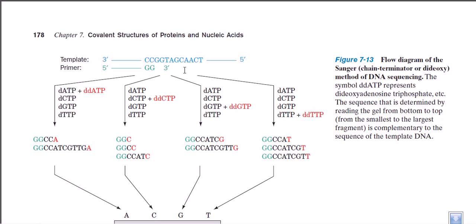Suppose this is the DNA sequence we get. We are considering only one strand, which is the template strand. If you know the DNA sequence for the template strand, you can eventually know the sequence for the opposite strand as well. So we need to know the sequence of only one strand. Now, how can we know the sequence? We go for the Sanger method of sequencing.